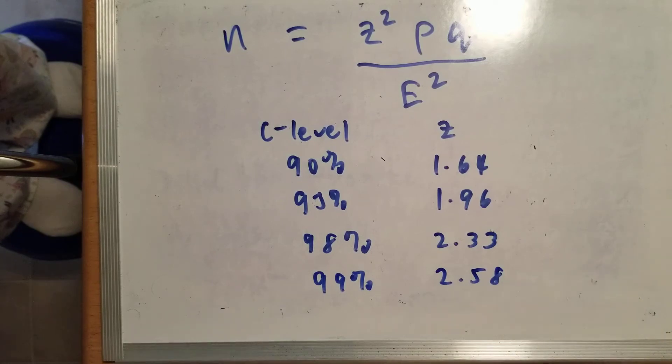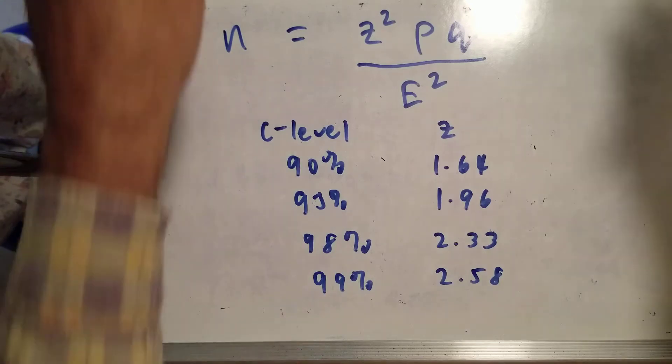These can be calculated using INVNORM, and there's an example in the homework that has you do this. But these are the most commonly used values, so this should be good enough. Now for the other parts of this formula.